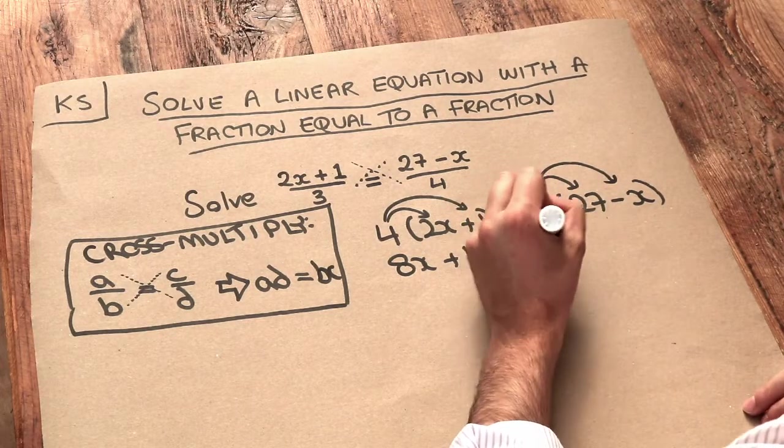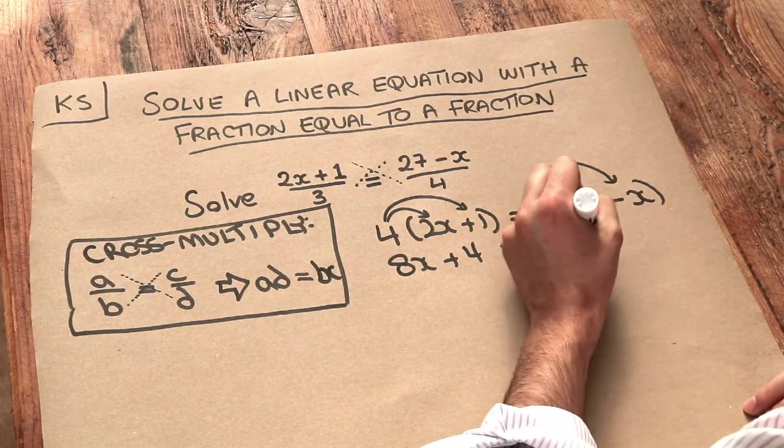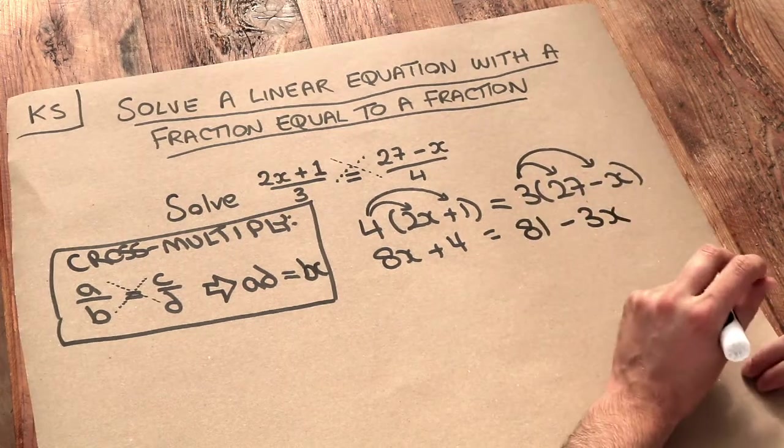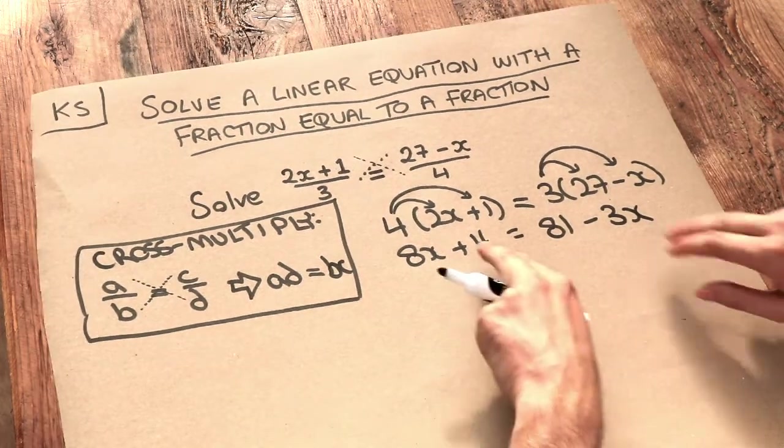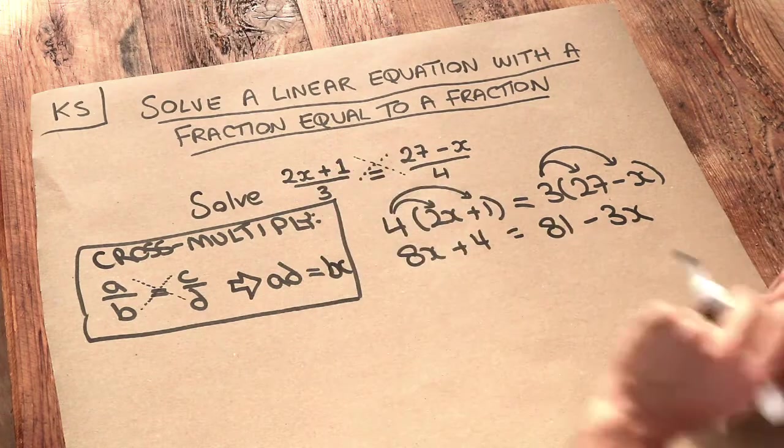3 times 27 is 81, and 3 times minus x is minus 3x. Now we've just got a relatively simple equation with the unknown on both sides, but no brackets, no fractions, nothing.